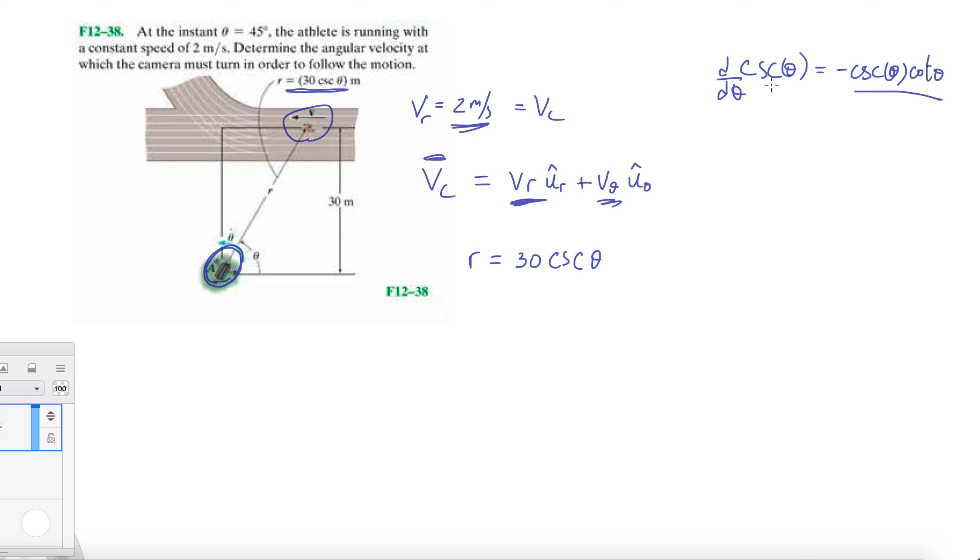That's what the table says. So let's just do a chain rule here, just like we've been doing. R dot equals dr/dθ times dθ/dt.